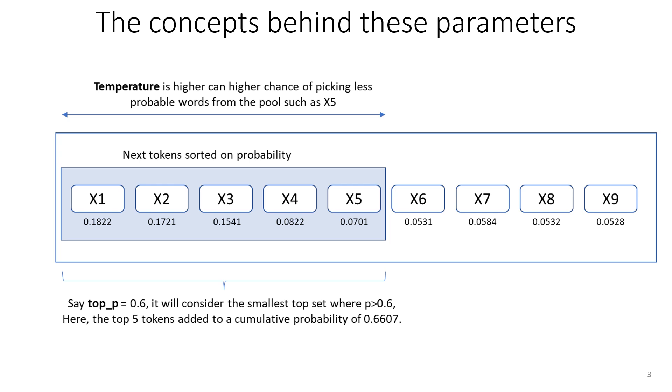Next, if we consider the Temperature, temperature is set to decide the variance within the pool we selected. If the temperature is higher value, then the chance can be given to even least probable candidates in the pool, such as X5. If the temperature is lower, the chance will be given to the tokens such as X1 and X2. If the temperature is 0, it will always pick the most probable token, which is X1. That's why every time it reproduces the results.